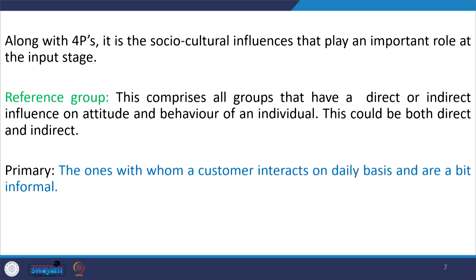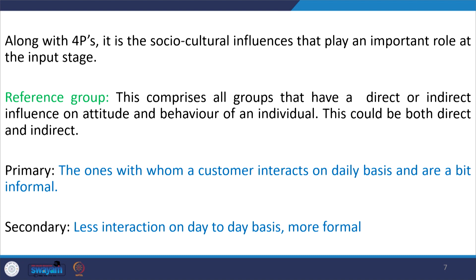Reference groups can be both direct and indirect, and can be bifurcated into primary and secondary categories. Primary reference groups are those with whom a customer interacts on a daily basis — family, friends, and coworkers — since these are informal interactions that happen regularly. Secondary reference groups have less day-to-day interaction and are more formal, such as organized groups that meet weekly or monthly, or celebrities. Though less frequent, they can still influence what you buy or which retail stores you prefer.